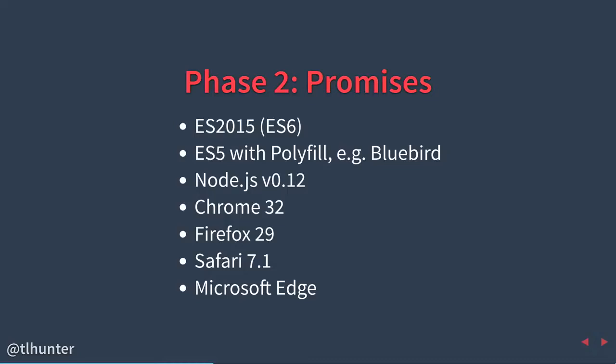Phase two: promises. Each phase happens at a future point in time and isn't necessarily better or worse than the one before — every phase has its pros and cons. Promises were introduced in ES2015. They don't represent a new syntax in the language; they represent a cool state machine for executing callbacks. You don't need JavaScript itself to support them — you could use a polyfill, for example Bluebird. Who's used Bluebird?